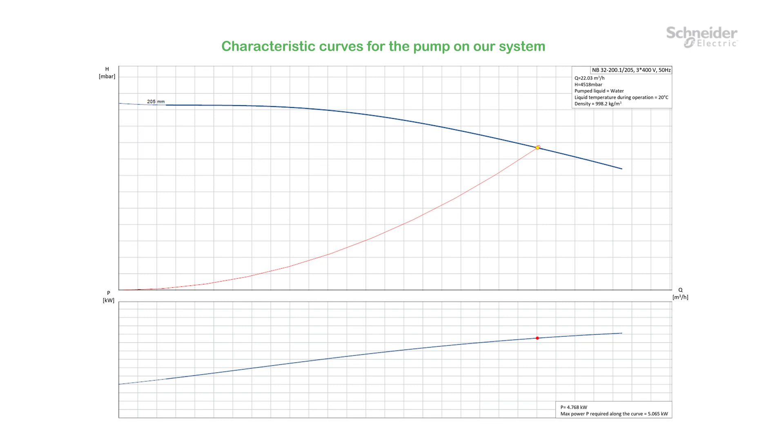The blue curves are the performance curves. The first one shows the connection between flow rate Q in cubic meters per hour and head H in millibar. In our example, the head starts at zero, but that depends on the system used.